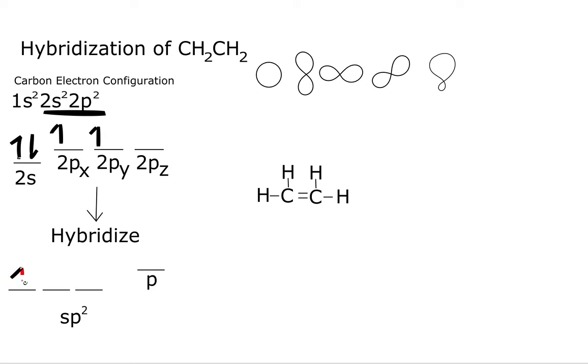So when we do that, we'll have 1 here, 1 here, 1 here, and 1 left in our p orbital. That's going to be used in our pi bonding.